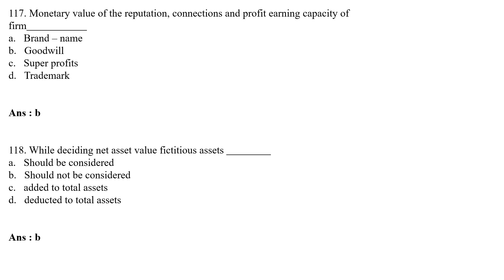MCQ 118: While deciding net asset value, fictitious assets — Option A: should be considered; Option B: should not be considered; Option C: added to total assets; Option D: deducted from total assets. The correct answer is Option B — fictitious assets should not be considered while determining net asset value.